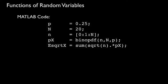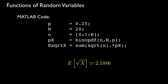Here we're taking advantage of MATLAB's function binopdf that evaluates the binomial probability mass function. We first define the success probability as 0.25, the number of trials as 20, and set up an index over the range from 0 incremented by 1 up to n, which is 20. We then define the probability mass function using the binopdf function. The expected value of the square root of x is the sum of the square root of all the index values times the probability mass function. Doing this, we find that the expected value of the square root of this random variable is roughly 2.1886.